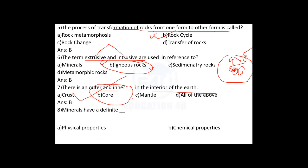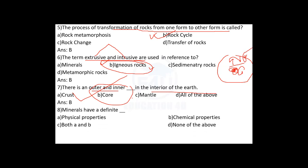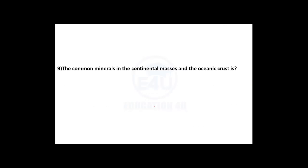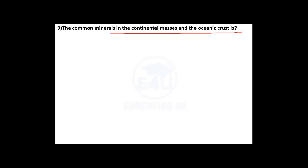Minerals have a definite physical and chemical property. Both A and B — physical and chemical properties — are the properties of minerals. The common minerals in the continental crust and oceanic crust are also discussed.